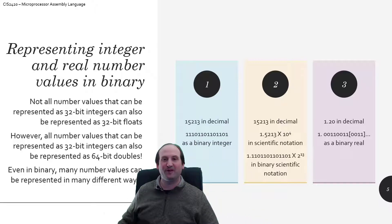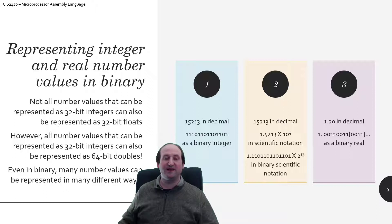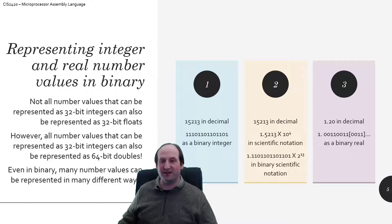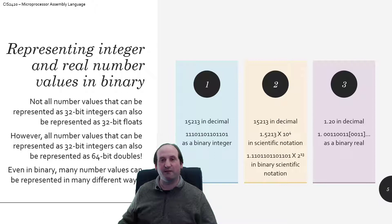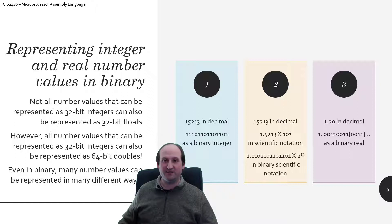A number like 15,213 can be represented in various ways: as a binary integer, as scientific notation (1.5213 × 10 to the 4th), or as binary scientific notation — something like 1.1101... times 2 to the 13th power. For numbers like 1.20, the binary representation would be 1.00110011, where 0011 is a repeating binary pattern. We're going to figure out how to convert these into the IEEE standard representation, either 32 or 64 bit.